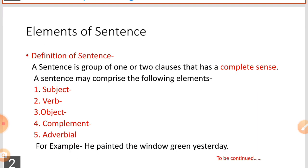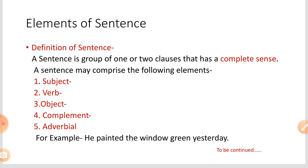To build a sentence, five things are needed. A sentence needs to be completed with the help of: first, subject; second, verb; third, object; fourth, complement; fifth, adverb.